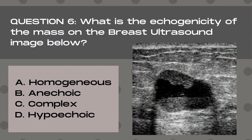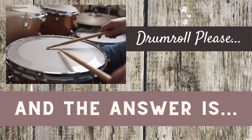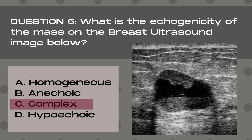Question 6. What is the echogenicity of the mass on the breast ultrasound image below? A. Homogenous, B. Anechoic, C. Complex, or D. Hypoechoic. And the answer is C. Complex.